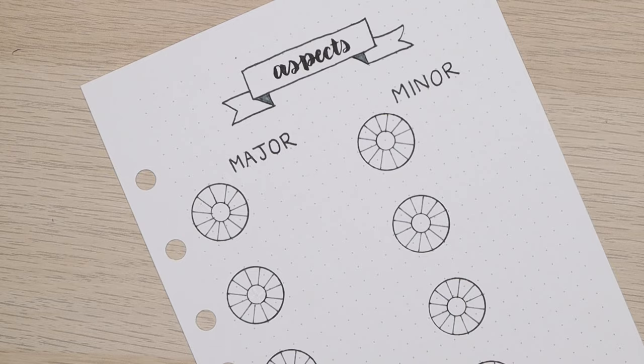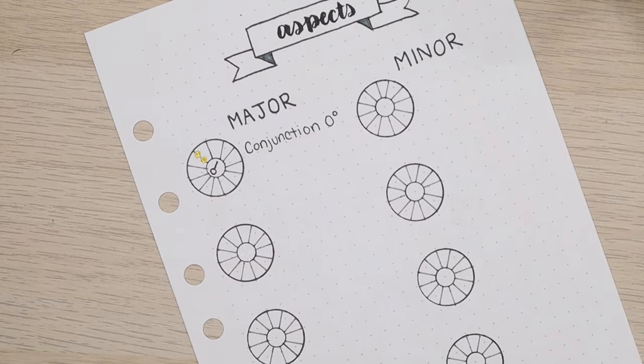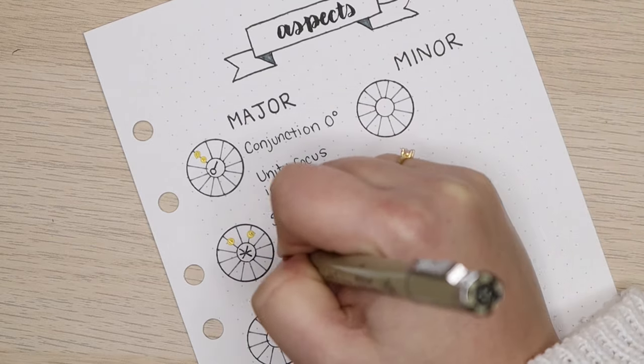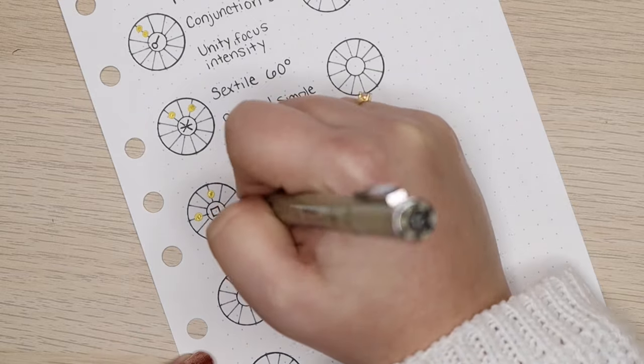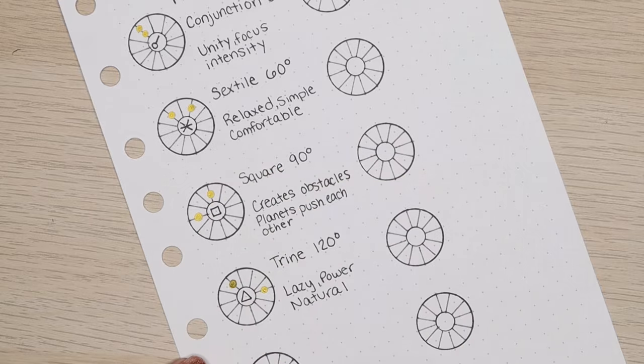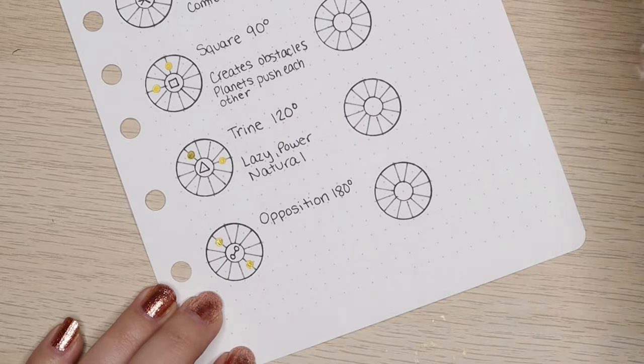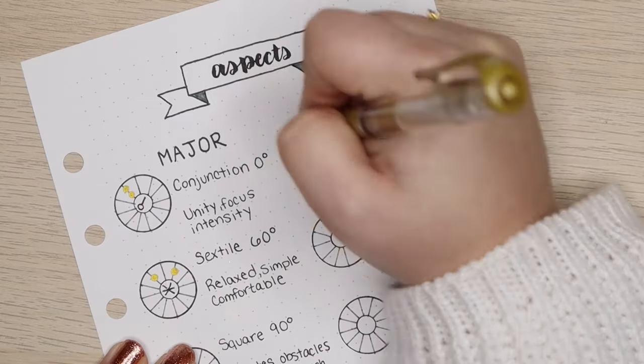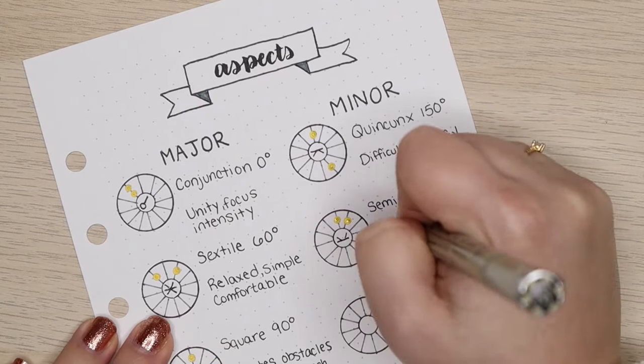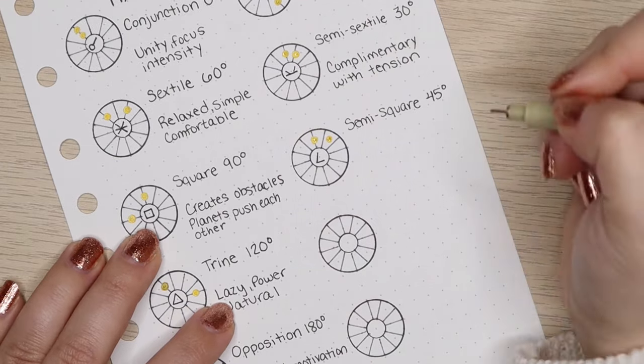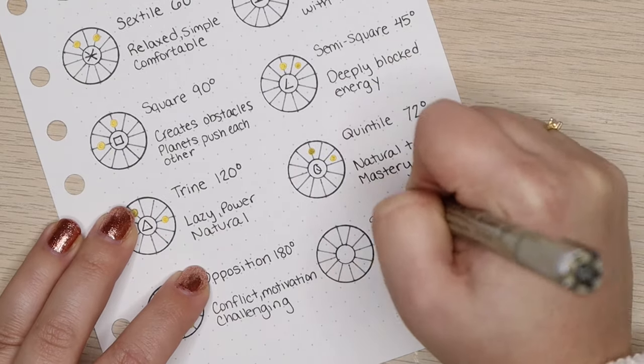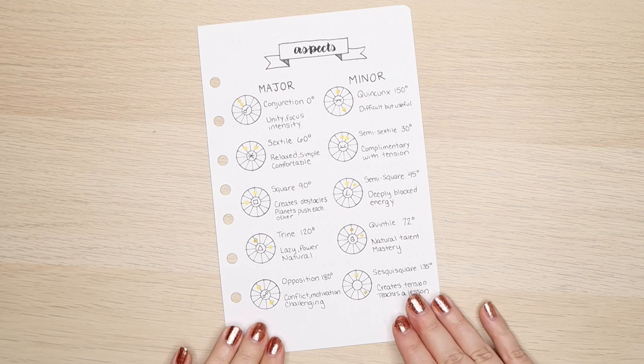So aspects aren't that hard to understand what they are. It's basically the angle at which various points in an astrology chart such as planets or signs are in relationship to each other. So for example, if two planets are about 90 degrees away from each other, it's called a square. If two planets are on complete opposite sides of the chart at 180 degrees, we call that an opposition. And depending on what aspect these planets are in relation to each other, it has a different significance. I'm just creating a bullet journal spread to reference.